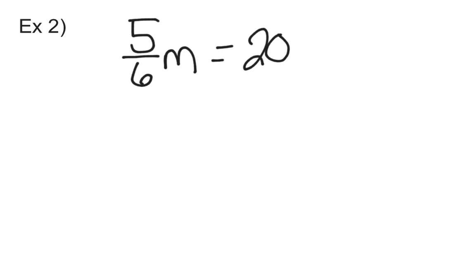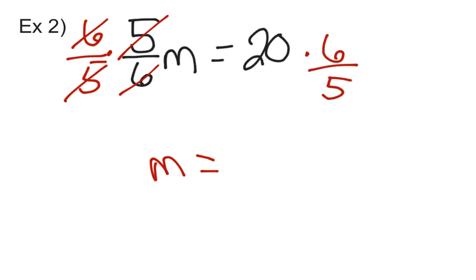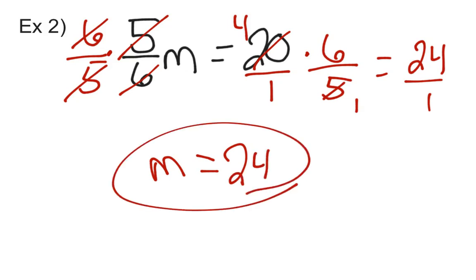Here's one for you to try — go ahead and pause the video. The fraction 5 sixths is being multiplied by n, so I get rid of it by multiplying by its reciprocal, 6 over 5. The 5s cancel, the 6s cancel, leaving just n. Multiply 6 over 5 on the right as well: put the whole number 20 over 1, reduce 5 and 20 to 1 and 4, giving 24 over 1, which is simply 24. There are no negatives, so the answer is positive: n equals 24.